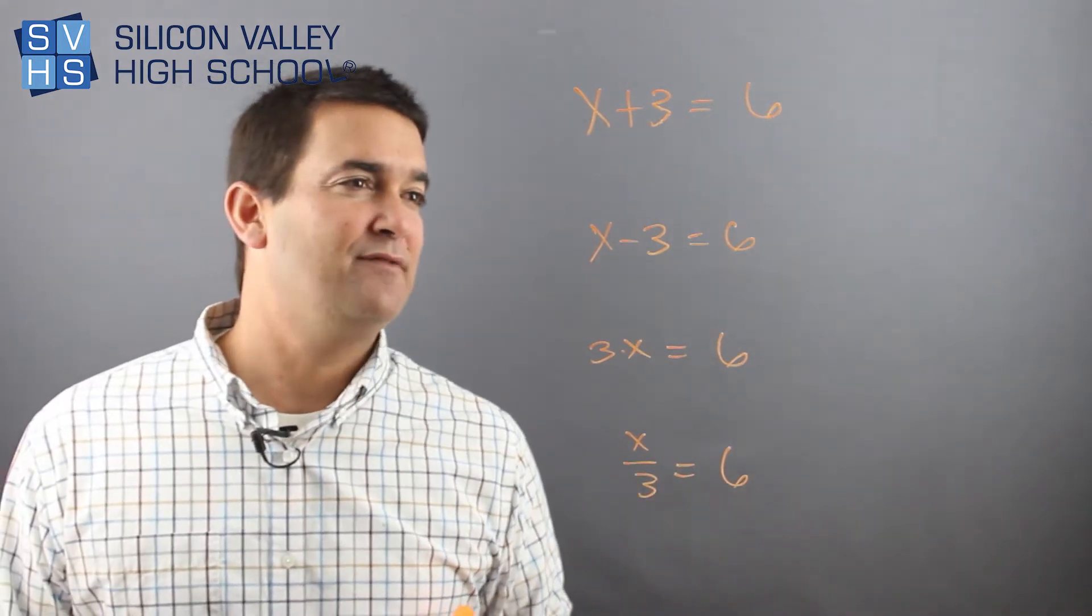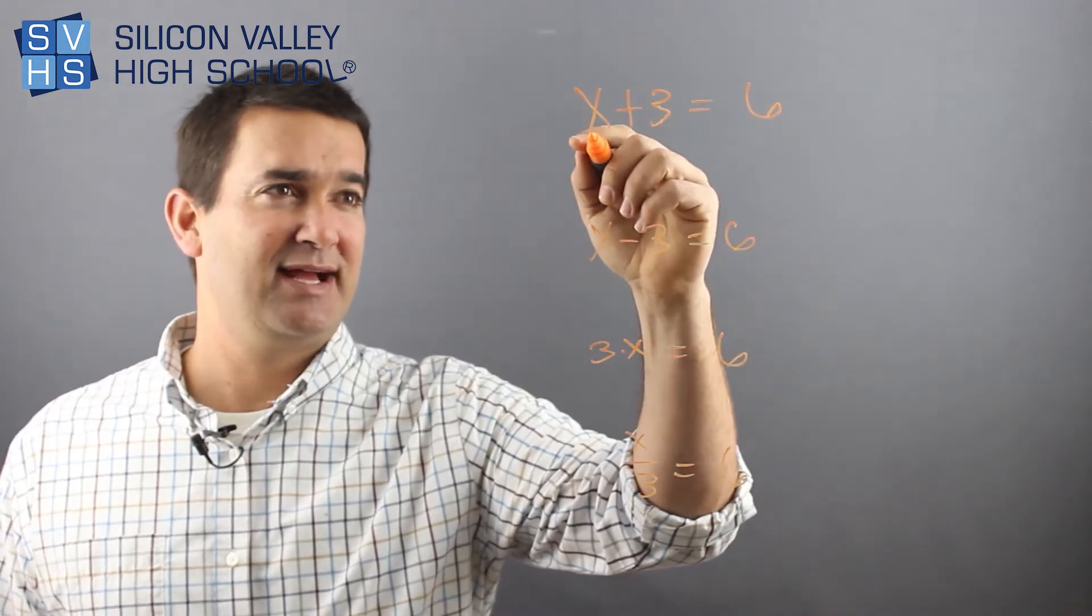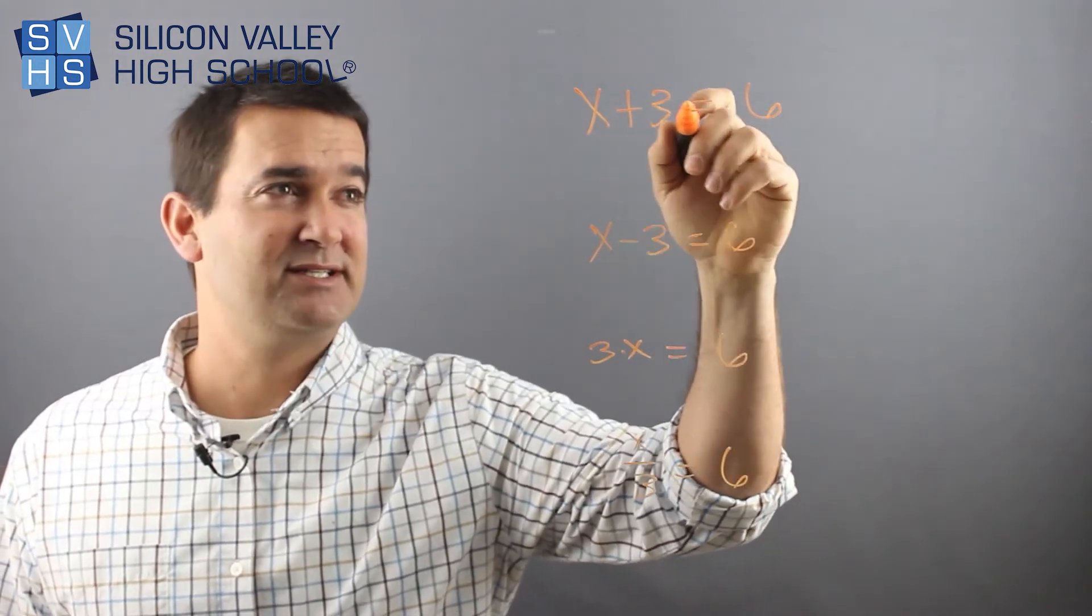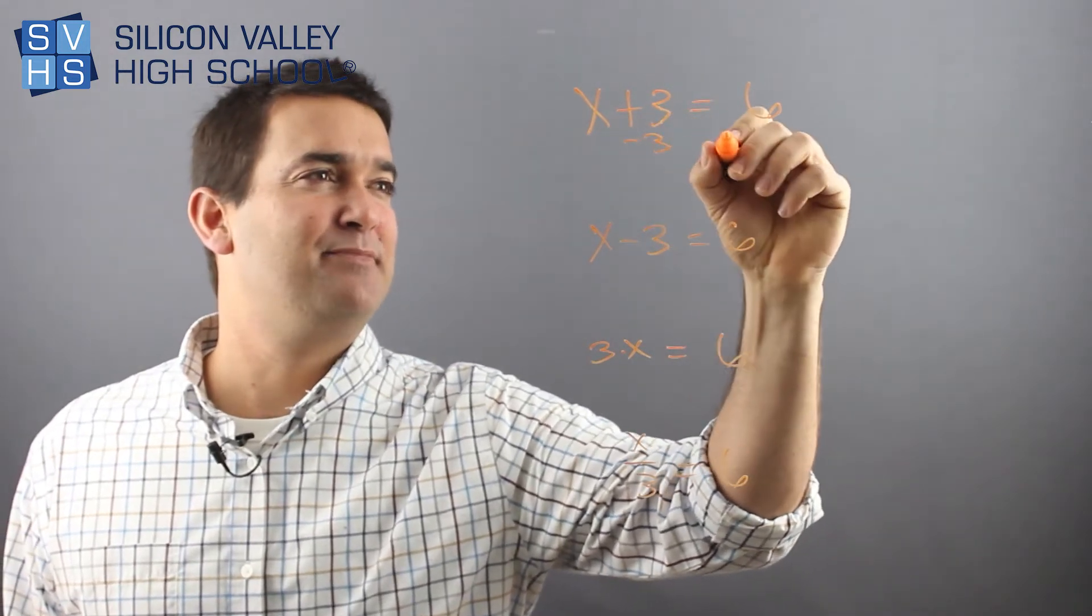The way to solve these is you just undo them. You do the opposite. In this case, my goal is to get x alone. What is the opposite of plus three? The opposite of plus is minus, so you'll minus three to both sides.